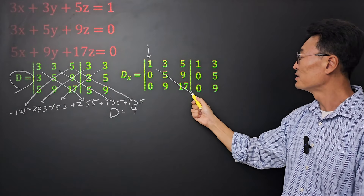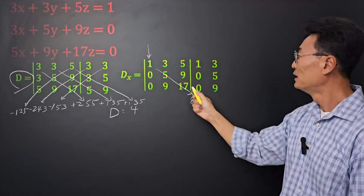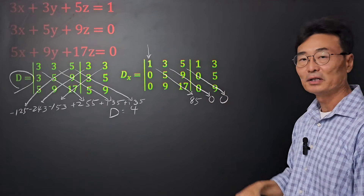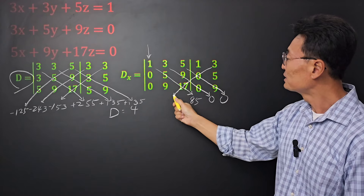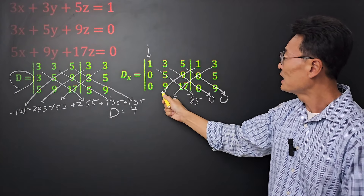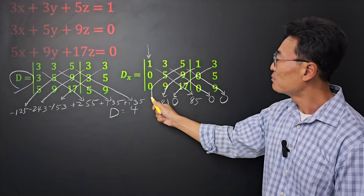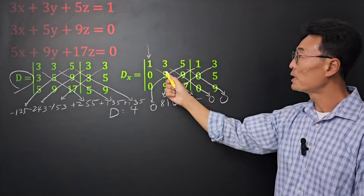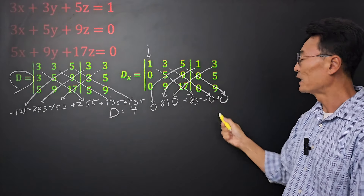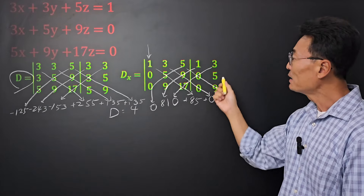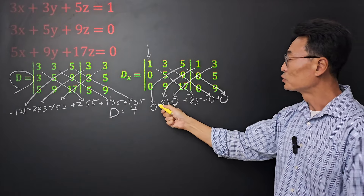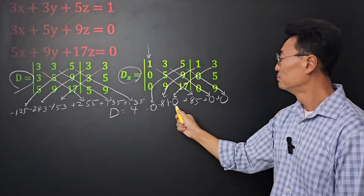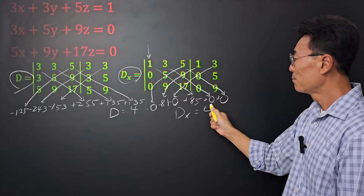So 1 times 5 times 17 is 85. Then 3 times 9 times 0 is 0, and 5 times 0 times 9 is 0 as well. Going right to left: 3 times 0 times 17 is 0, 1 times 9 times 9 is 81, and 5 times 5 times 0 is 0. Luckily we have a bunch of zeros, which makes life easier. Simplifying all this, dx is positive 4.